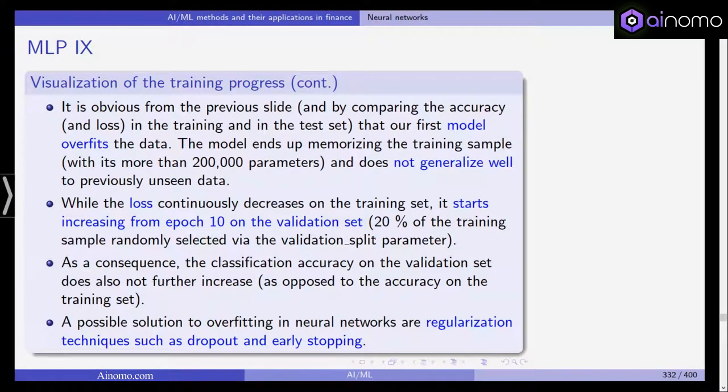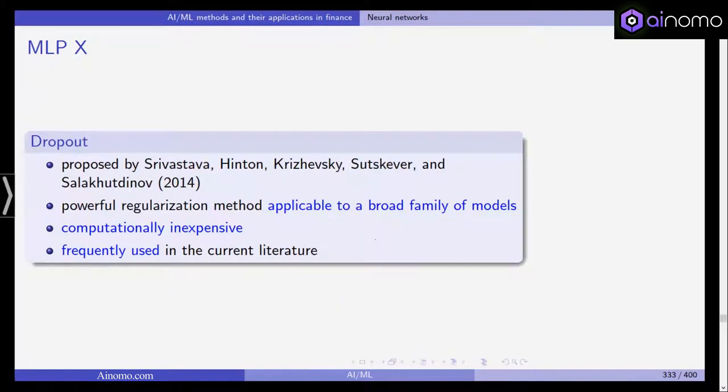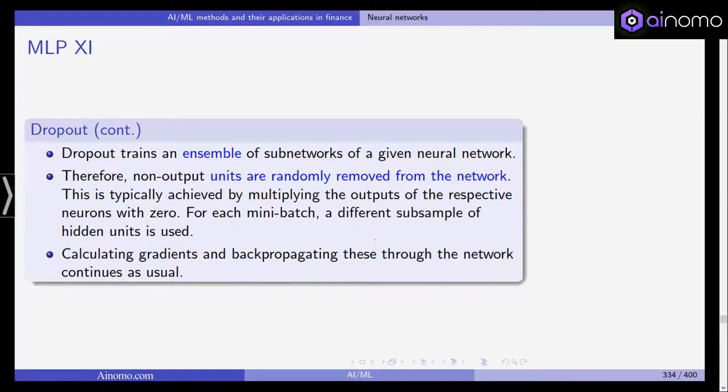This can be done, for example, via dropout and early stopping, and we will be doing this in this example. Dropout was proposed by Srivastava, Hinton, Krizhevsky, Sutskever, and Salakhutdinov in 2014. It's a powerful regularization method that is applicable to a broad family of models. It's computationally inexpensive and frequently used in the current literature.